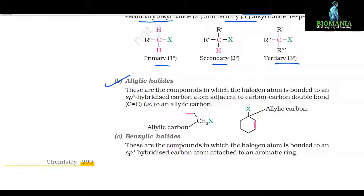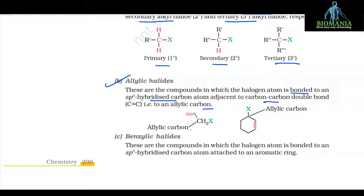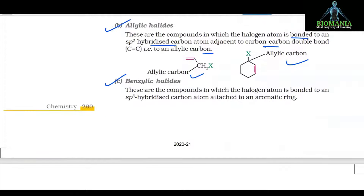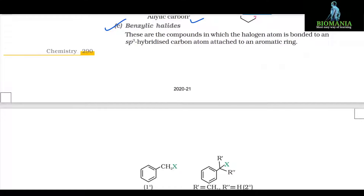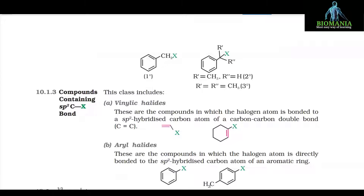Allylic halides are compounds in which the halogen atom is bonded to an sp3 hybridized carbon atom adjacent to a carbon-carbon double bond, that is to an allylic carbon. Here you can see the allylic carbon. Benzylic halides are compounds in which the halogen atom is bonded to an sp3 hybridized carbon atom attached to an aromatic ring.